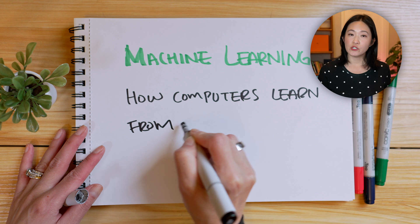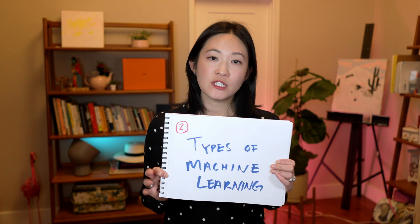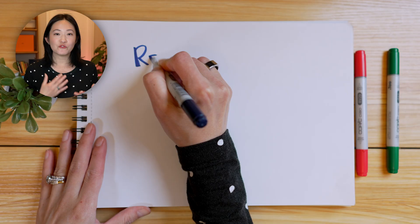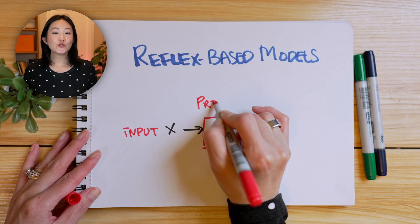Machine learning is how computers learn from data to improve performance over time without being explicitly programmed to do so. Basically, instead of telling the machine exactly what to do line by line, we feed it a lot of data and let it figure out patterns on its own. Next, let's go over the main types of machine learning models that are widely used. A lot of AI systems are based on reflex-based models called predictors — systems that take input like an image or a sentence, use learned patterns, and predict an output.